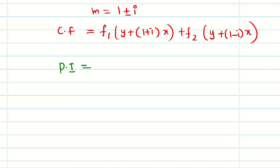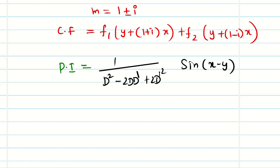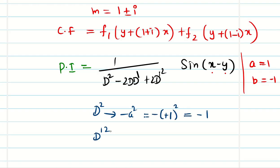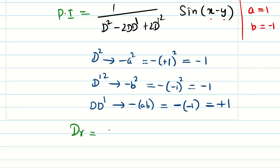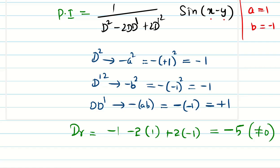Now we find the particular integral: PI = 1/(D² - 2DD' + 2D'²) · sin(x - y). Here a = 1, b = -1 (coefficients of x and y). We compute: D² = -a² = -1; D'² = -b² = -(−1)² = -1; DD' = -a·b = -(1)(−1) = +1. The denominator becomes: -1 - 2(1) + 2(-1) = -1 - 2 - 2 = -5. This is non-zero, so the problem is straightforward.